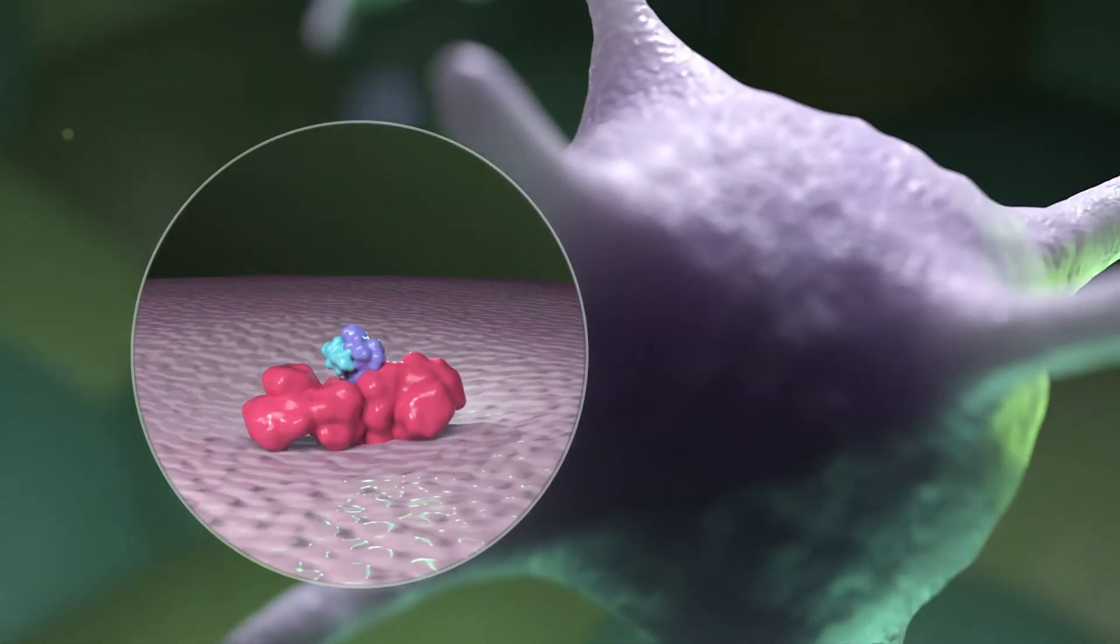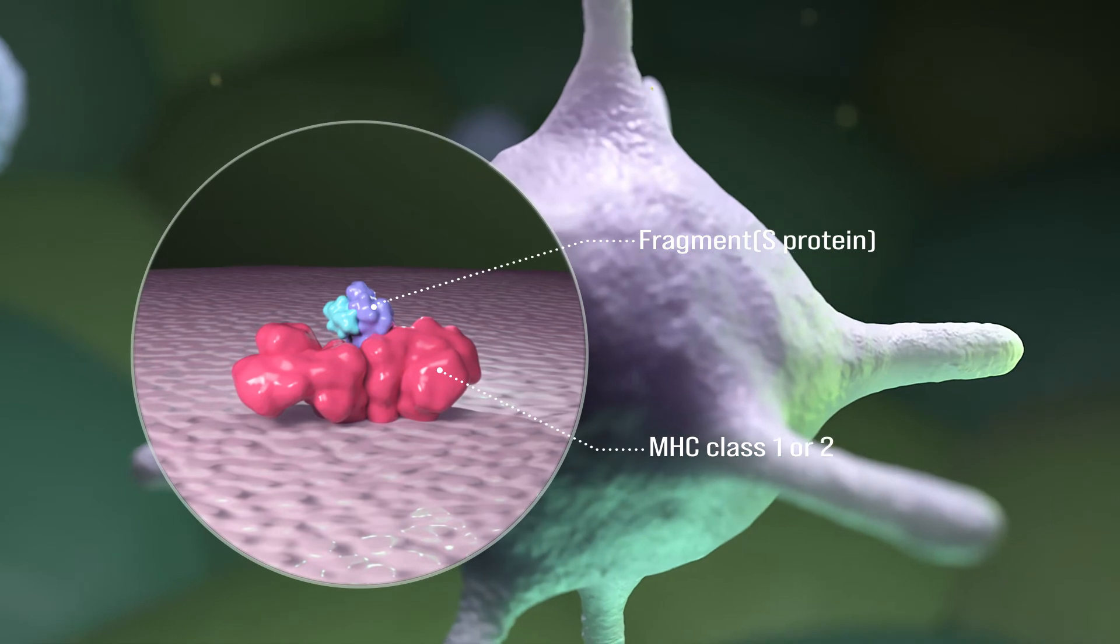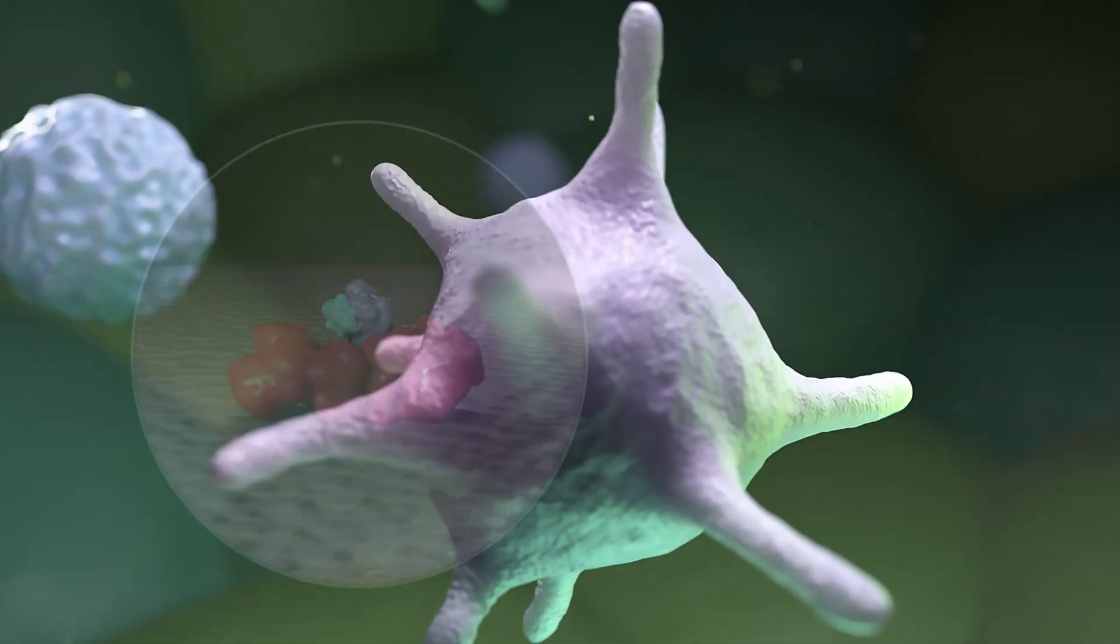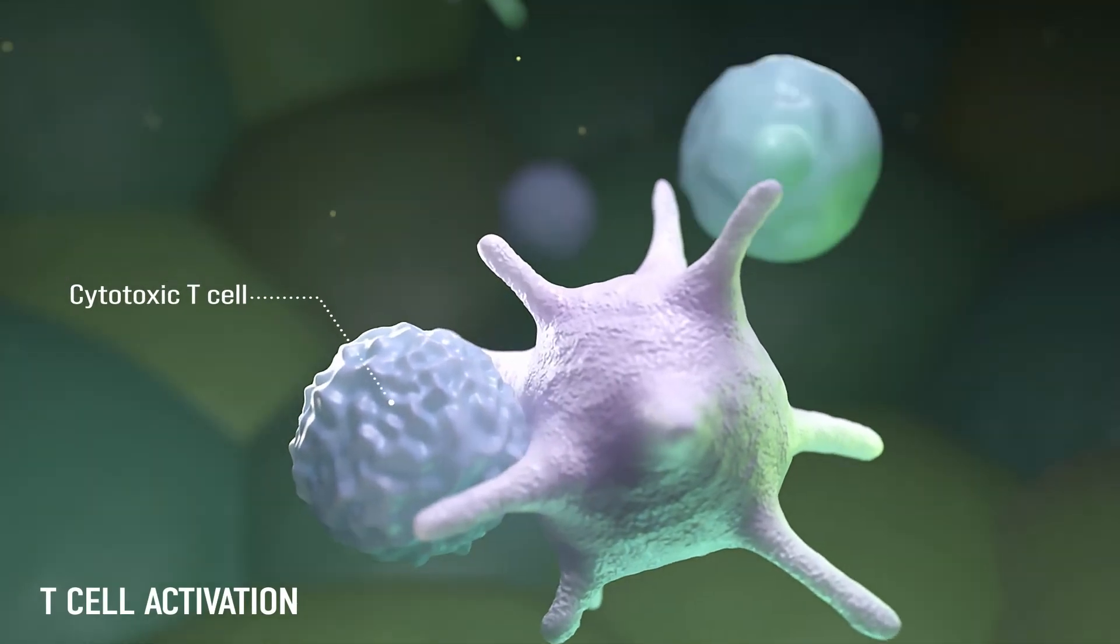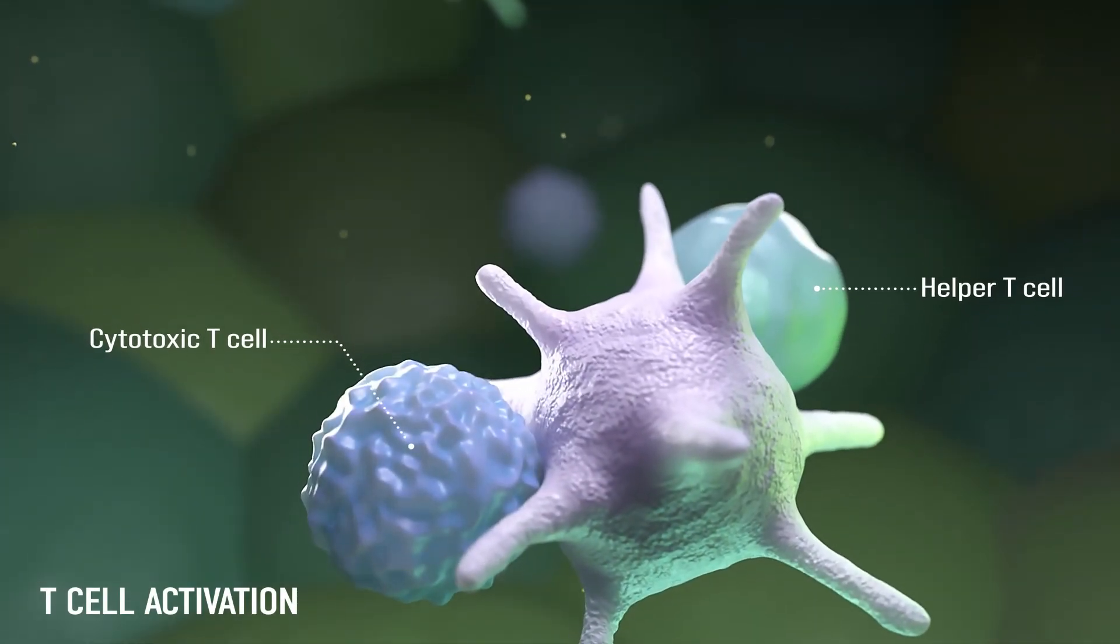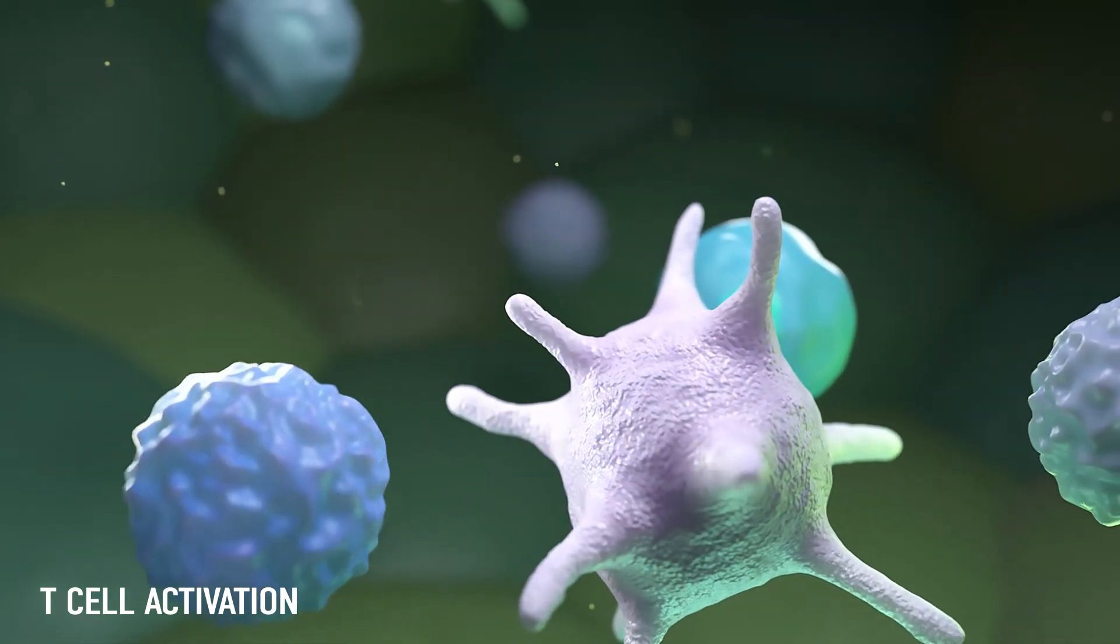At this time, dendritic cells break the spike protein down and present the fragment together with the MHC-1 or 2 proteins on the surface, and cytotoxic T-cells and helper T-cells responsible for adaptive immunity recognize this fragment and receive a signal and are activated.